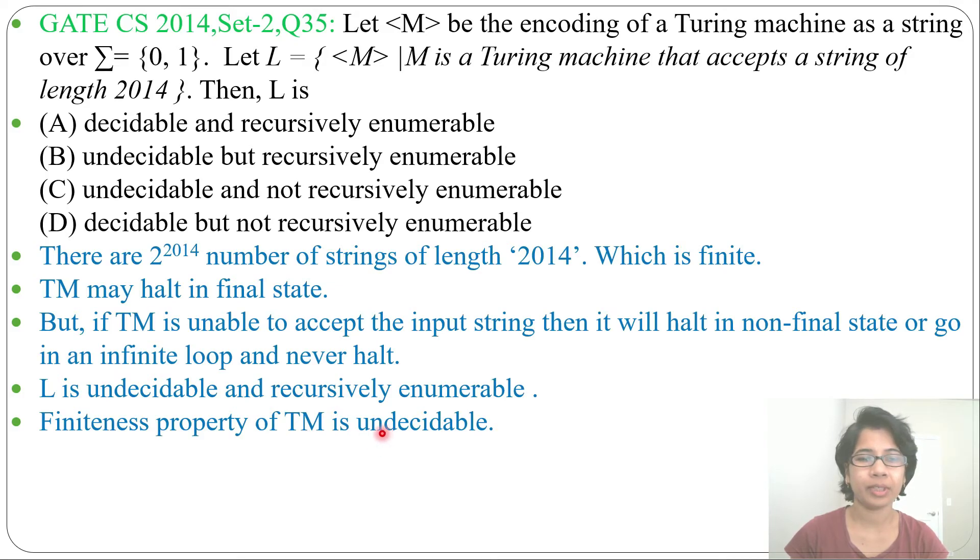Undecidable so it is recursively enumerable. Now just check in which option it is present. Undecidable but recursively enumerable. It is present in option B.